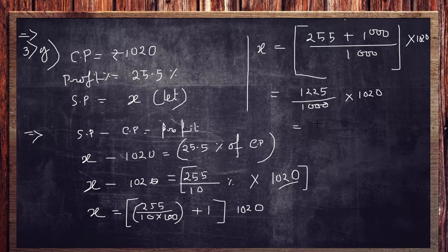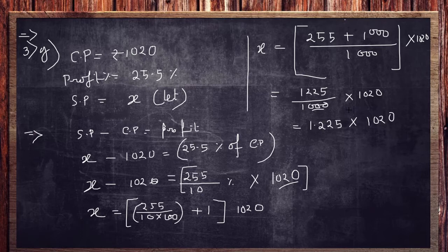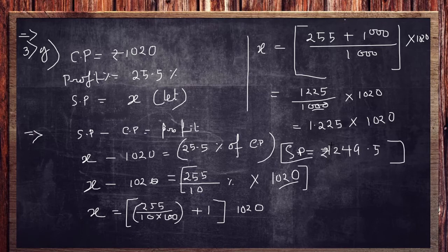There are three zeros so 1255/1000 equals 1.225. Multiplying 1.225 by 1020 gives 1249.5 rupees, which is your selling price. You can also use the direct formula for faster calculation, but this method provides full understanding of what's happening.